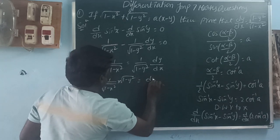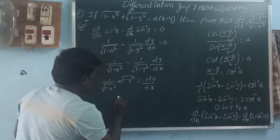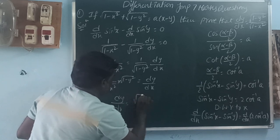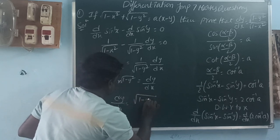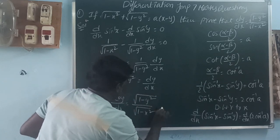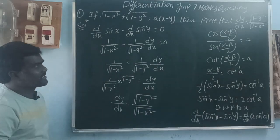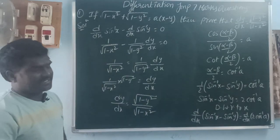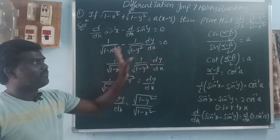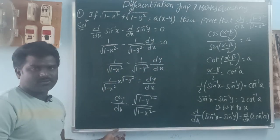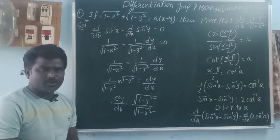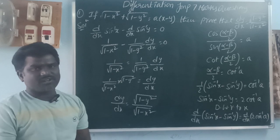The minus term moves to the right side, giving 1/√(1 - x²) = (1/√(1 - y²)) · (dy/dx). Rearranging, dy/dx = √(1 - y²) / √(1 - x²), which is exactly what we needed to prove. Thank you for watching — please subscribe to our YouTube channel and share with your friends.